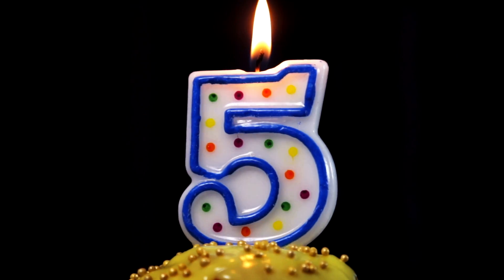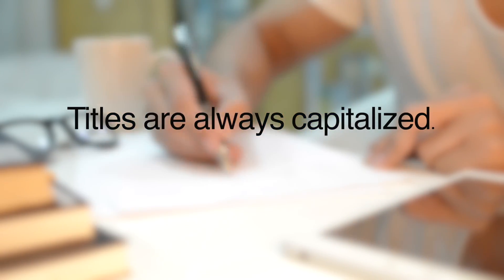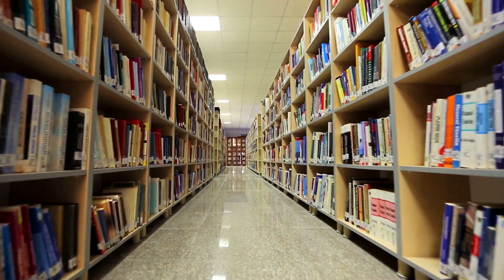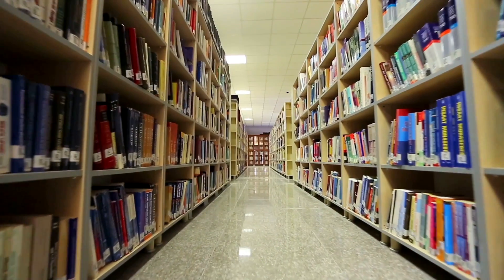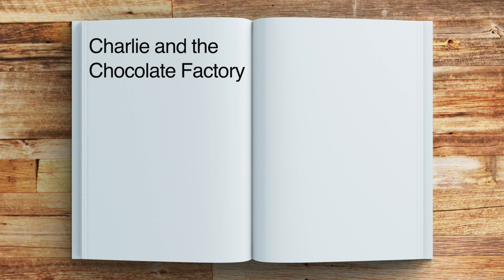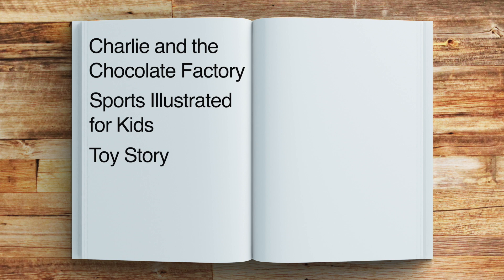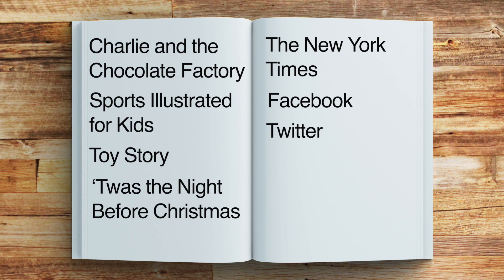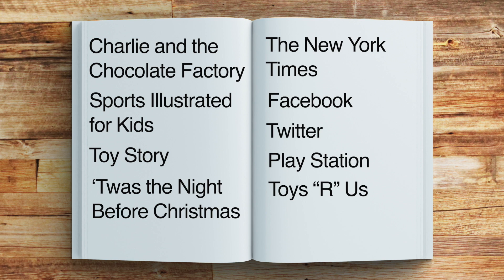Rule number five: titles are always capitalized. That includes books, movies, TV shows, websites, poems, stores, songs, and more. Here are a few examples: Charlie and the Chocolate Factory, Sports Illustrated for Kids, Toy Story, T'was the Night Before Christmas, The New York Times, Facebook, Twitter, PlayStation, Toys R Us. Notice how we only capitalize the important words in the title? Words like 'and' and 'the' are typically left in lowercase.